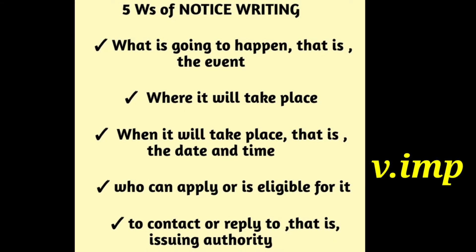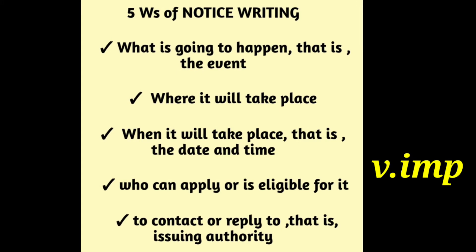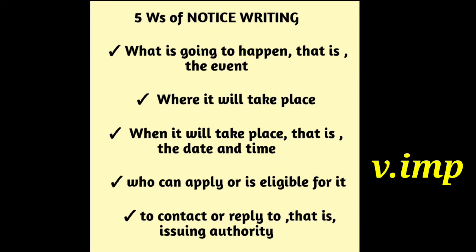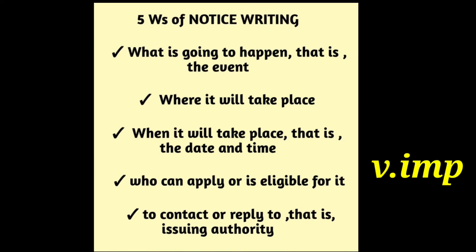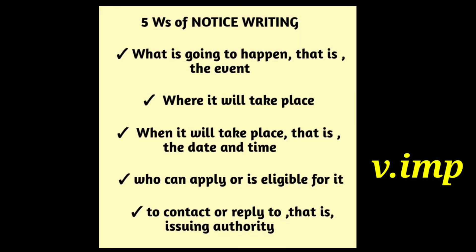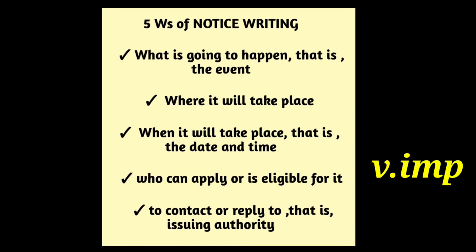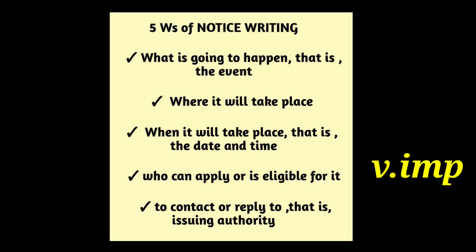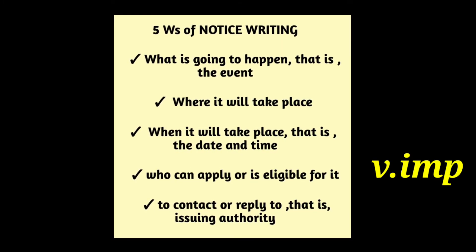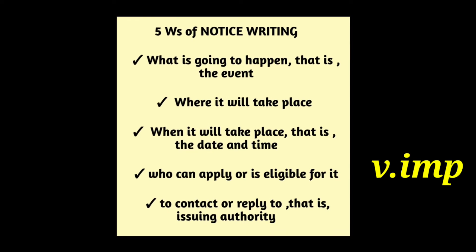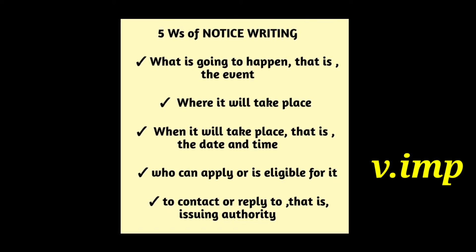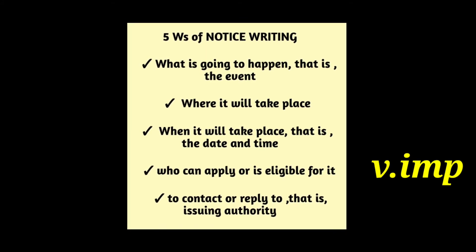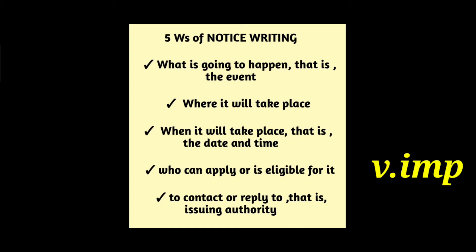Try to remember the five W's of notice writing. Number 1: What is going to happen? That is, the event. Number 2: Where it will happen? Number 3: When it will take place? That is, the date and time. Number 4: Who can apply or is eligible for it? Number 5: To contact or reply to? That is, the issuing authority. A well-written notice must inform the readers about the five W's.